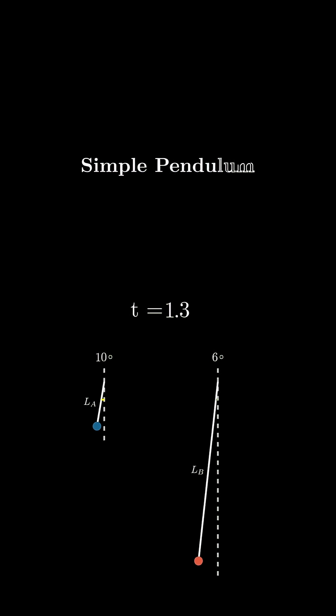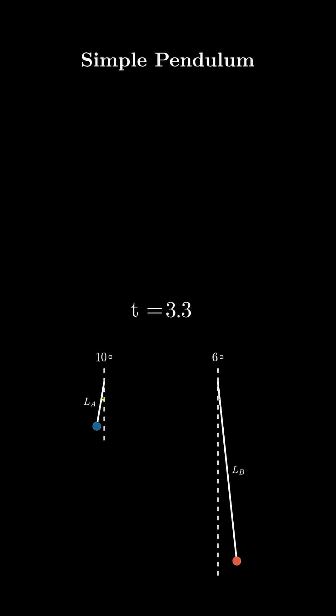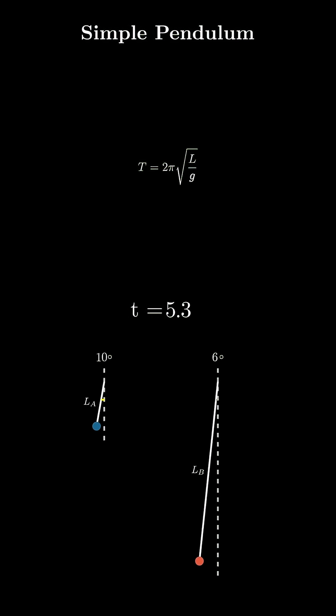So, for any simple pendulum, we know that period T is equal to 2π radical L over g. So, each of the pendulums has its own period in terms of its length, TA being the period of A and TB that of B.